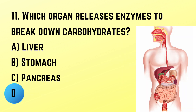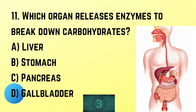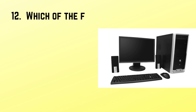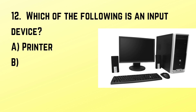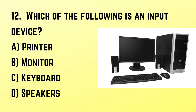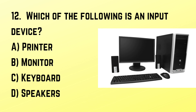Question number 11: Which organ releases enzymes to break down carbohydrates? Correct answer: D. Gallbladder. Question number 12: Which of the following is an input device? Correct answer: C. Keyboard.